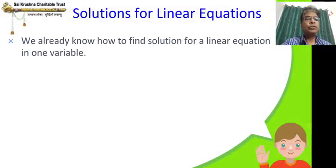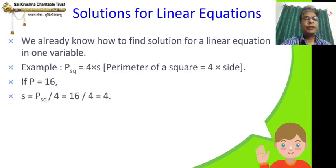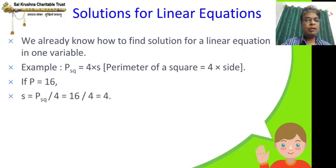We already know how to find a solution for a linear equation in one variable. For example, P square equal to 4 into S — perimeter of a square equal to 4 into side. If P equals 16, then S equals P square by 4. I have taken 4 to the other side. If it is plus or minus, the sign changes; if it is multiplication or division, it goes to the opposite — that is cross multiplication.